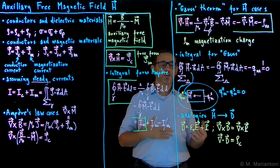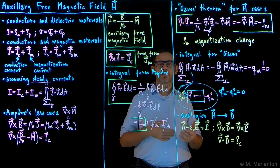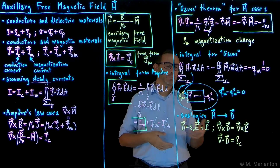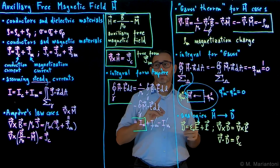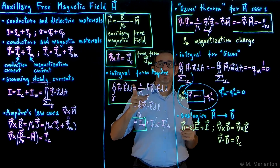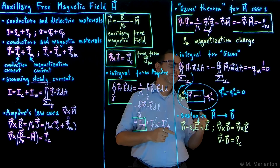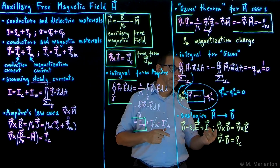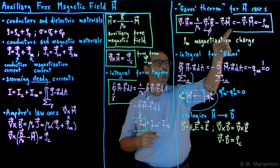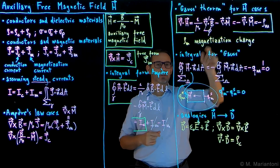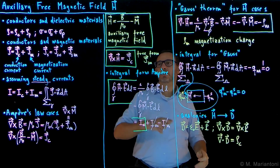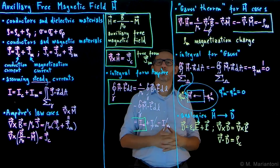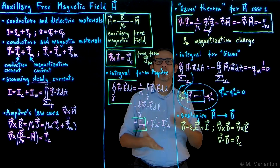For Gauss's theorem for H: the divergence of H is minus the divergence of M, which behaves as a source — minus ρM, called the magnetization charge — with the caveat that integrating over an entire region gives zero, but locally we can get non-zero values. We use this concept to understand the north and south poles of a magnet. Since we haven't found monopoles, the overall sum must be zero. The analogy between H and D is that D equals ε₀ E plus P — similar structure, with curl and divergence relations swapped and ε and μ inverted.